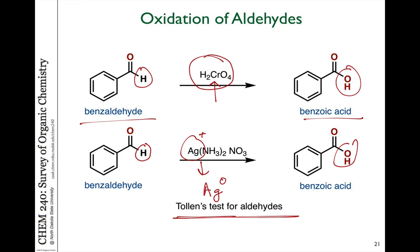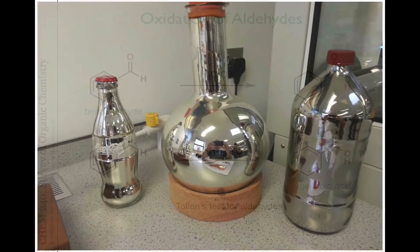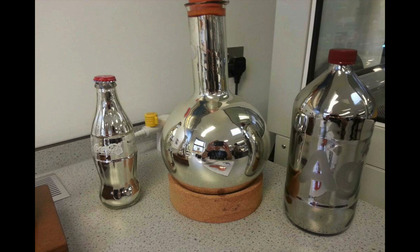So before we had modern methods to determine the structures of molecules, people did physical chemical tests to determine what functional groups were present. So if you knew you had a carbonyl but you didn't know if it was an aldehyde or a ketone, the Tollens test was one way to do that because when you carry out the reaction, it generates beautiful silver mirrors on the glass where you do the reaction with because as the aldehyde is being oxidized to the carboxylic acid, the silver is being reduced to silver metal and making these shiny mirrors on the glass.